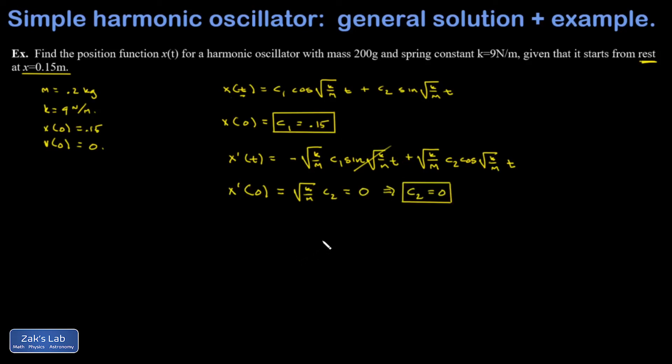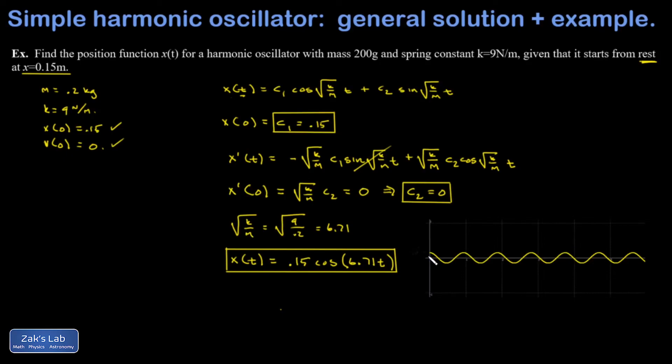So now I plug in these values of c1 and c2 back into the general solution, and I have an equation telling me exactly how this thing moves for all moments in time. I think before I plug in, I'm going to go ahead and get a number on root k over m, and I get about 6.71 for that. So my position function for this oscillator is c1, that's 0.15. This one turns out to be a pure cosine function. This always happens when you start from rest. 6.71 t. So now I can go to my graphing software, and that position function tells me precisely where this oscillator is for all moments in time in the future.